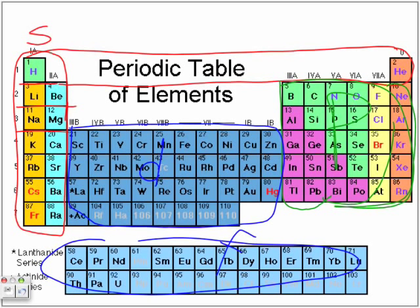Those bottom rows represent the f shell. By being able to identify this from your periodic table, we can look at an element — for example, beryllium — and know that beryllium is found in the s shell, in period number two, which means it has two energy levels. Its atomic number is four, meaning it has four protons and four electrons. Beryllium is located here with a total of four electrons.